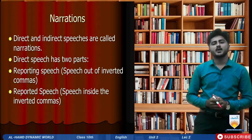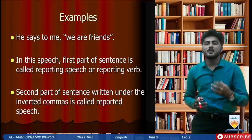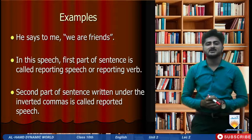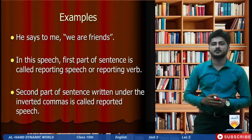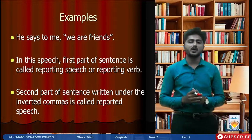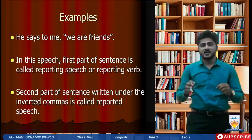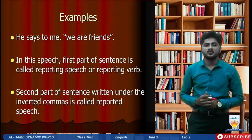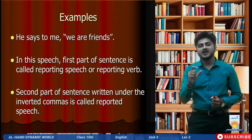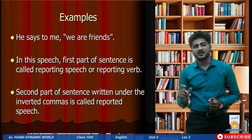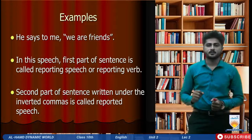Let me give you an example. For instance: 'He says to me, we are friends.' Here there are two parts of the sentence. The first part, 'he says to me,' is called reporting speech — it is outside the inverted commas. The second part, 'we are friends,' is inside the inverted commas and is called reported speech.